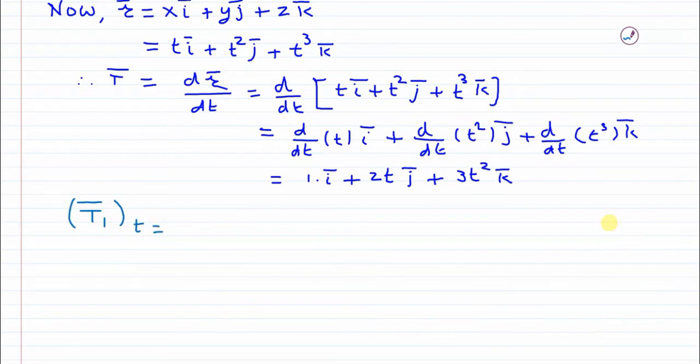Now you find out the value of tangent vector at t equals 0. So in place of t it will be 0. Here also in place of t it will be 0. So it will be only i bar.